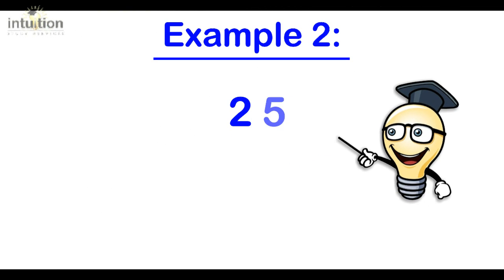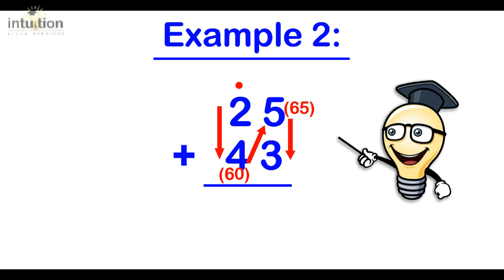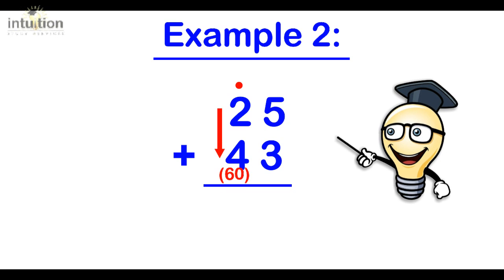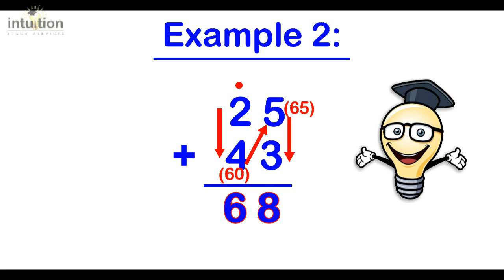Let's take a look at another example. We have 25 plus 43. Starting from the tens column, 20 plus 40 is 60, add the 5 which is 65, add the 3 which is 68. Or in other words 20, 60, 65, and 68. It can be that quick.